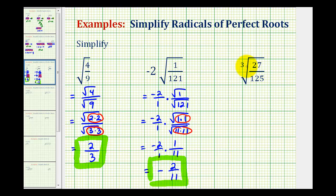Our last example is a cube root. The steps will be the same. This is equal to the cube root of 27 over the cube root of 125. And again, because 27 and 125 are perfect cubes, this will simplify perfectly.